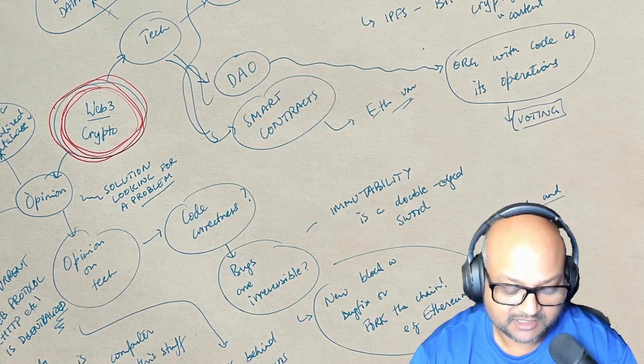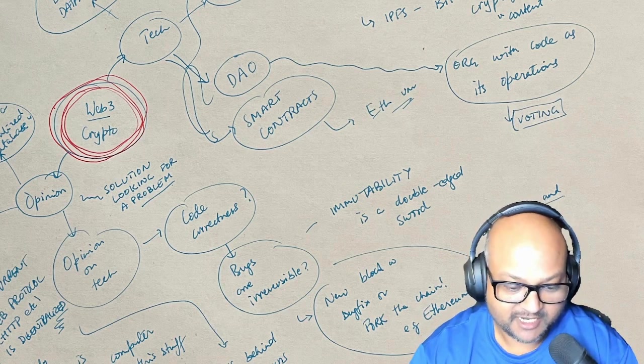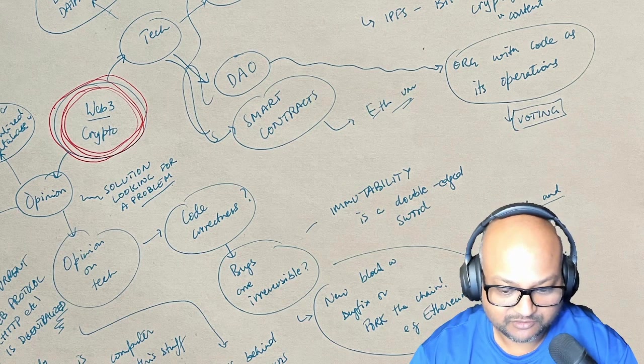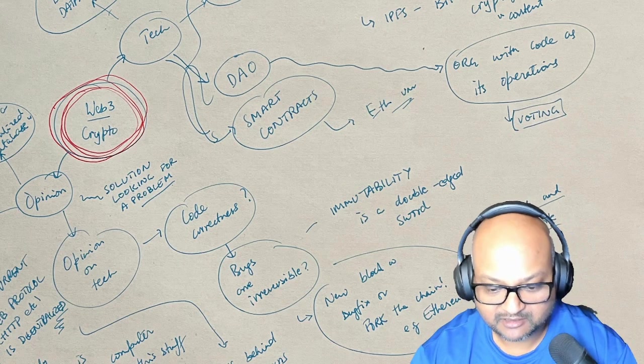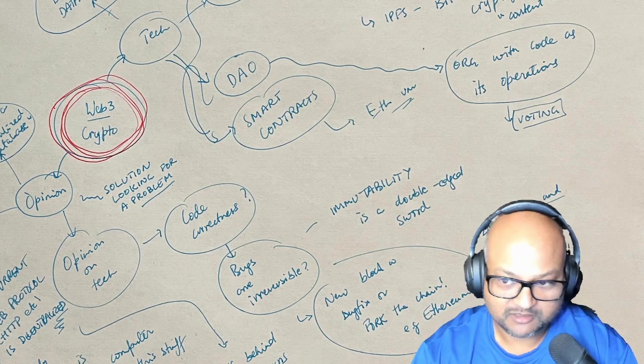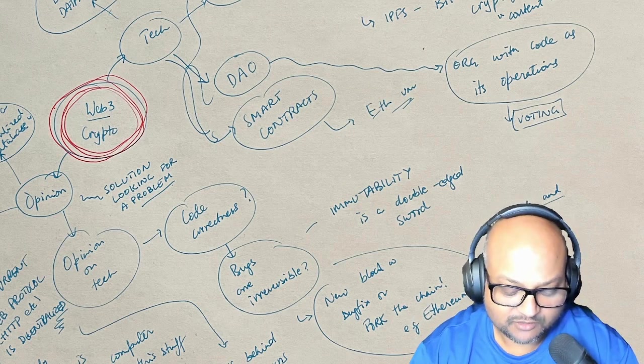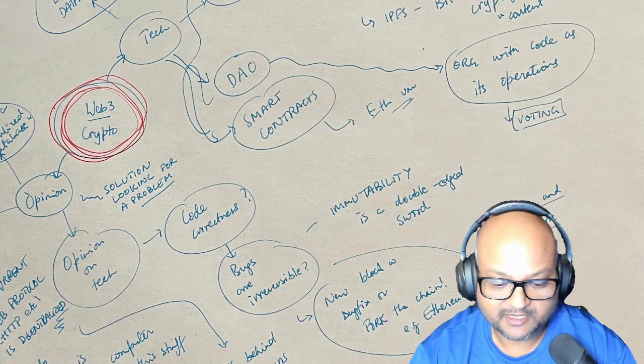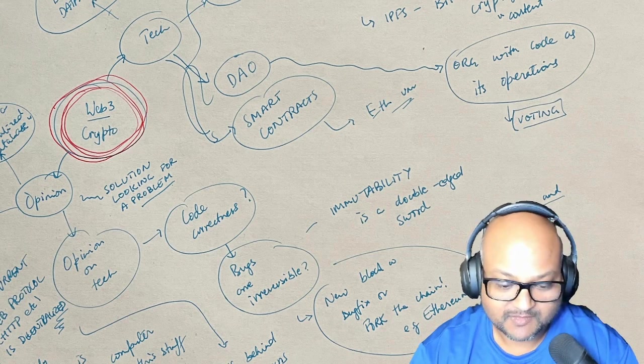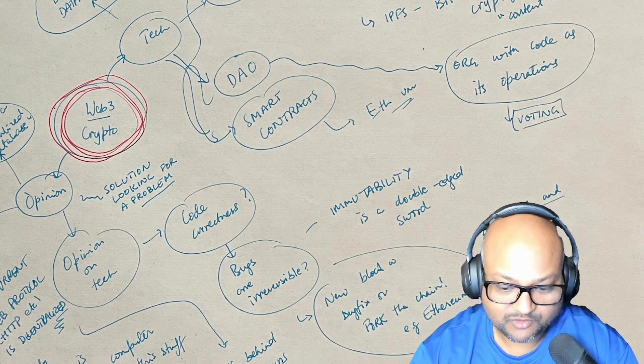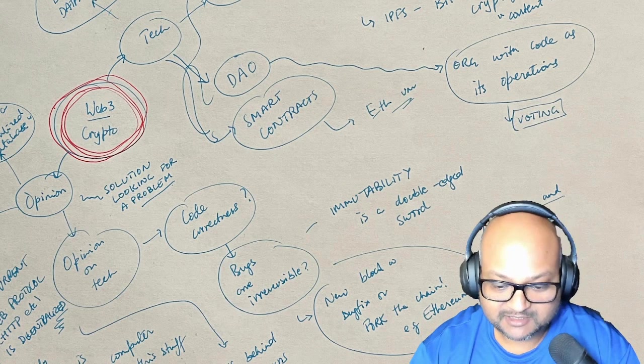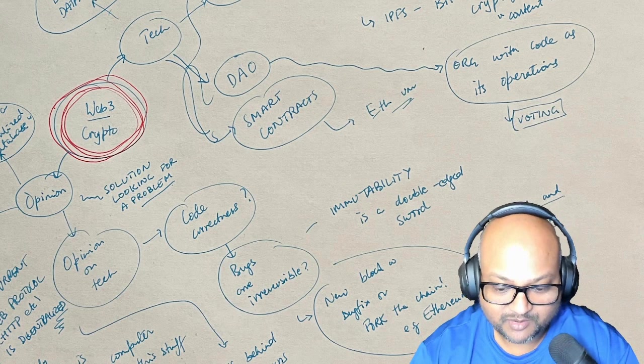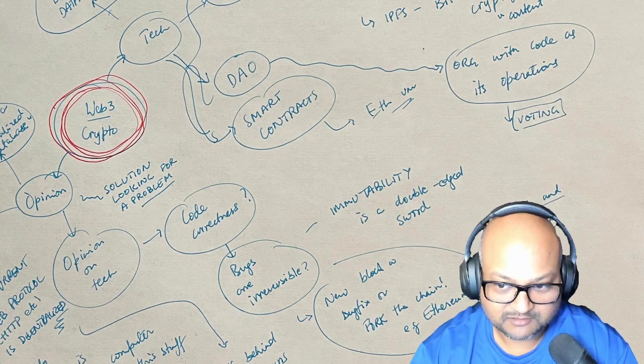Especially when you consider the Ethereum blockchain, which also allows you to execute Turing-complete code when going from one block to the next. The question is, what do you do about bugs in your smart contract? If you have a bug in your smart contract that pays someone more than you want it to or makes an incorrect decision, those bugs are also irreversible.